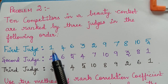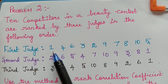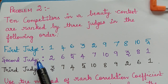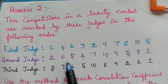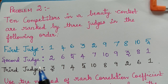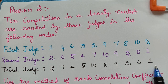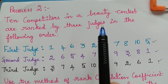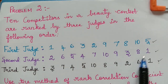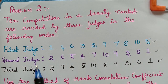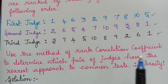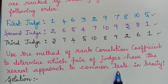The first judge has ranked those 10 competitors in this order: 1, 4, 6, 3, 2, 9, 7, 8, 10, and 5. Similarly, the second judge has ranked those same 10 competitors in another order, and the third judge has ranked the same 10 competitors in yet another different order. So there are three different orders by which the three judges have judged the beauty contest.